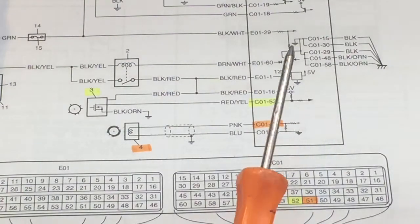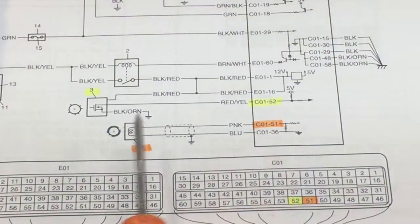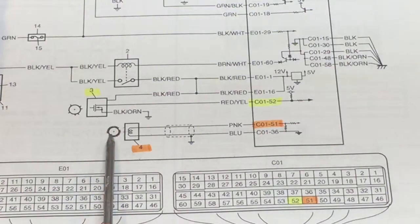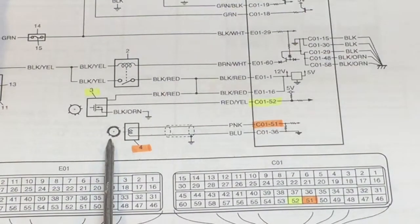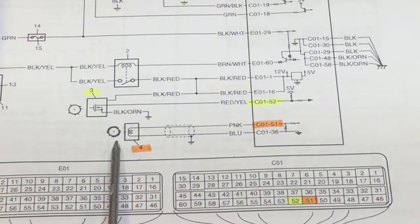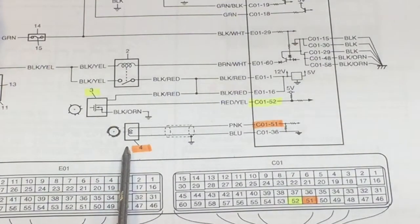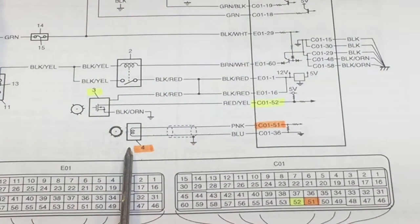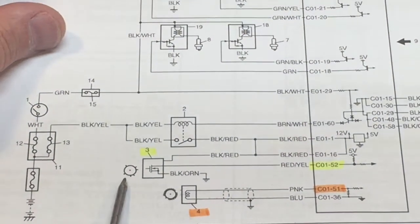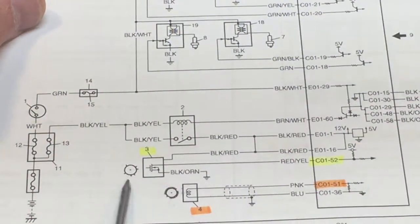From that signal, the engine control module can sense crank position and crank speed. There are a few notches missing from the reluctor wheel on the crankshaft—that provides indexation to the system.